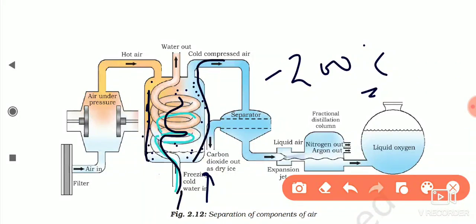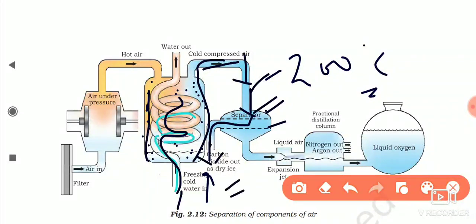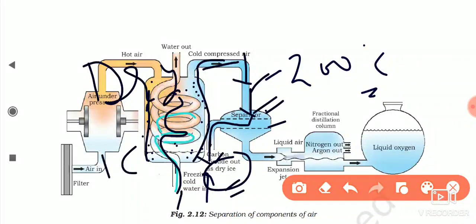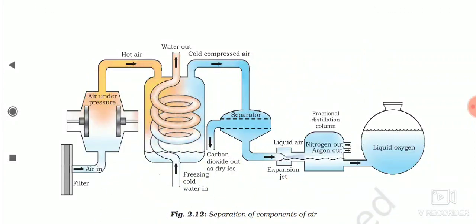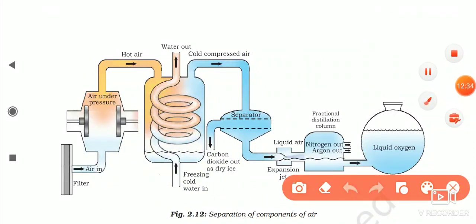Next, the compressed air passes through a separator. When air passes through the separator, carbon dioxide is separated out in solid form as dry ice. The air is now free from carbon dioxide.